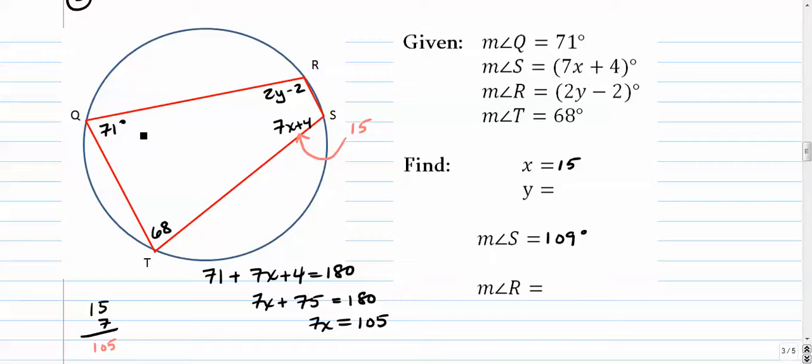105 plus 4 is 109 degrees. And that makes sense, right? Because it needs to be supplementary to 71. Well, 71 plus 109 is, of course, 180. So that's a good thing.